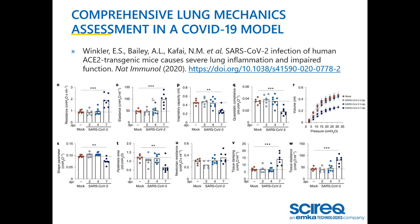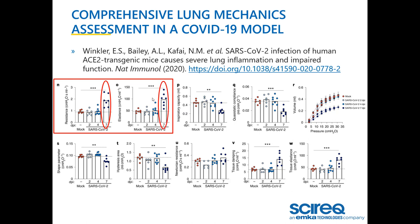Total respiratory system resistance and total respiratory system elastance were assessed using the snapshot perturbation, a single frequency forced oscillation that is fitted to the single compartment model. Significantly increased resistance and elastance were observed at 7 days post-infection.